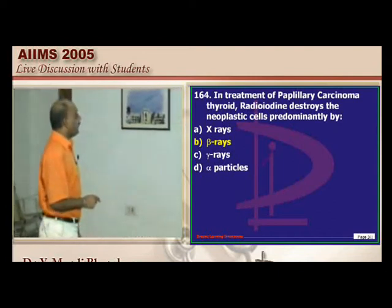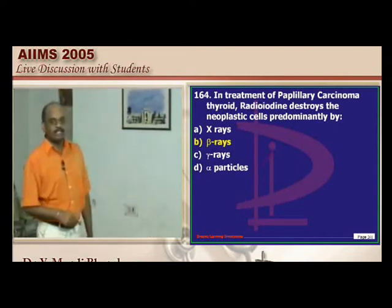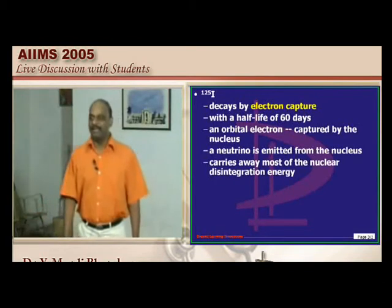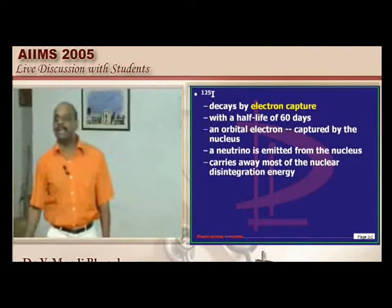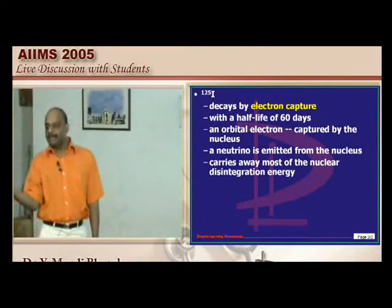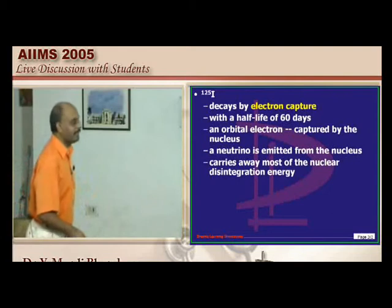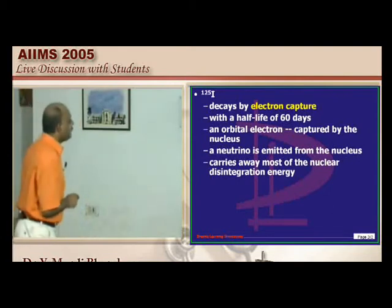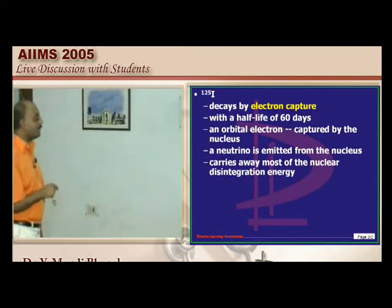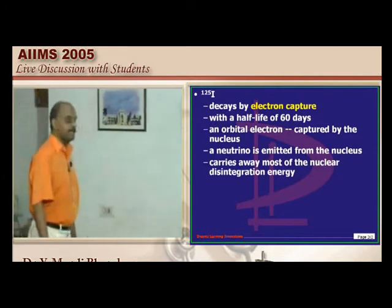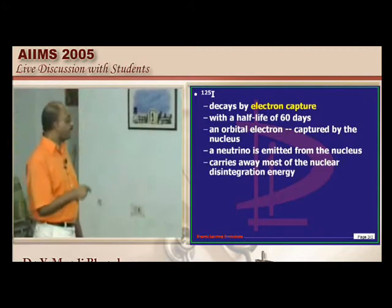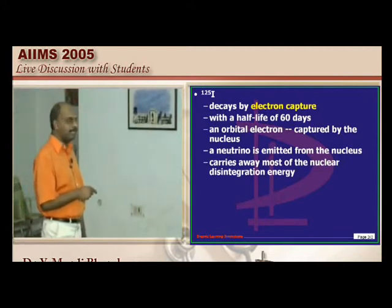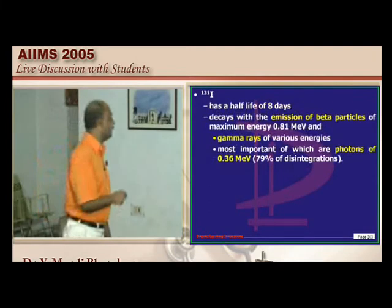In papillary carcinoma of the thyroid, radioiodine destroys neoplastic cells. I-125 decays by electron capture with a half-life of 60 days — the orbital electron is captured by the nucleus, a neutrino is emitted, and energy is released by disintegration.